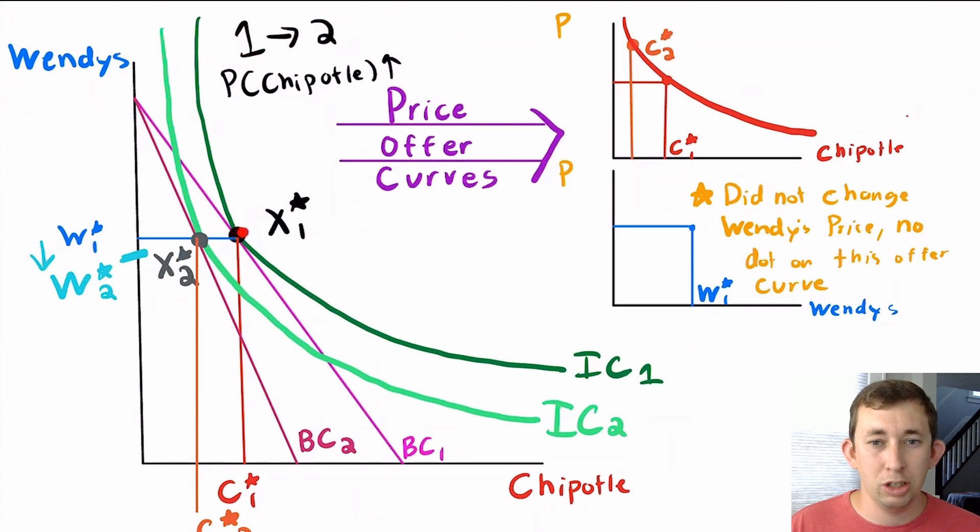When I increase the price of Chipotle, we shift the budget constraint in and draw a new indifference curve—indifference curve 2 here in light green—that is tangent to the second budget constraint. When we do that, we get our new preferred bundle x*2.